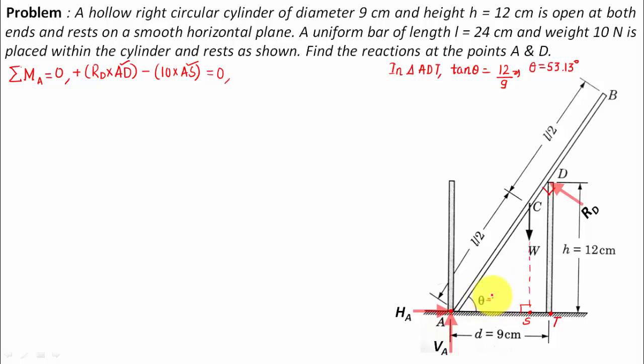If you try to solve this into a calculator you're going to get the value of theta is equal to 53.13 degrees. If this is theta, the angle made by the rod with the horizontal, then over here we'll also have this as theta. We know the value of theta.